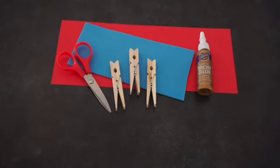To make a clothespin trinket box you need three clothespins, glue, and cardboard or foam and a scissor.